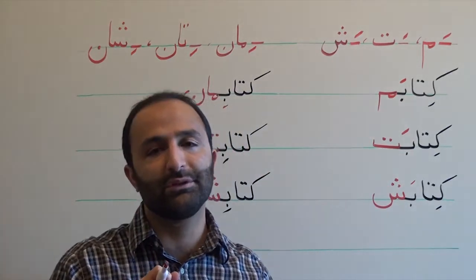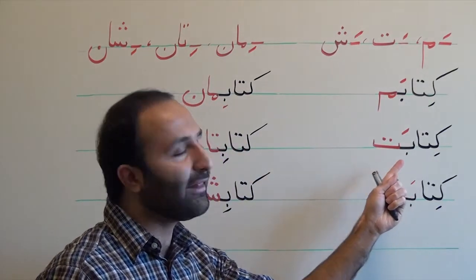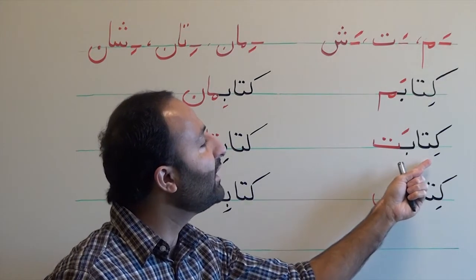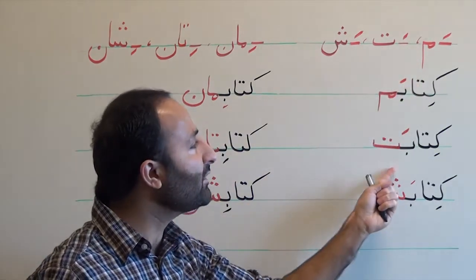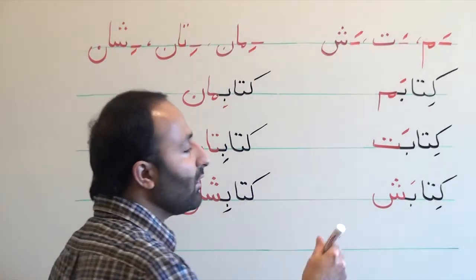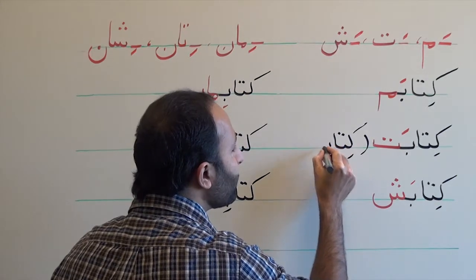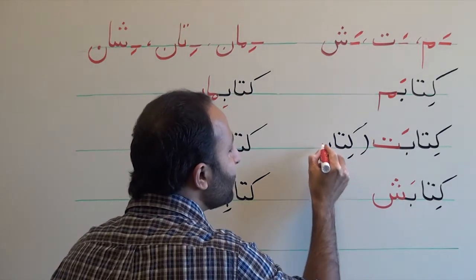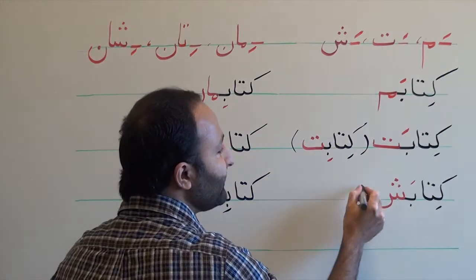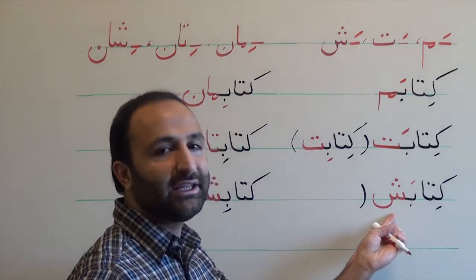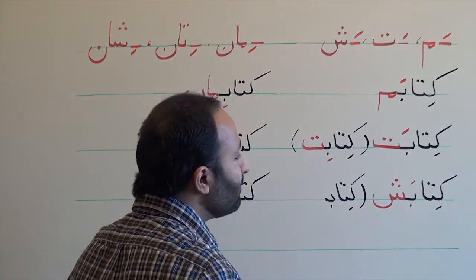There are some points to know. The first one is that there is a difference in spoken and written Persian. As you see, we pronounce 'ketab-at' with the ending '-at' in written Persian, but in spoken Persian it becomes 'ketab-et.' So 'a' changes to 'e.' The same with the third person singular: 'ketab-ash' in written changes to 'ketab-esh' in spoken.